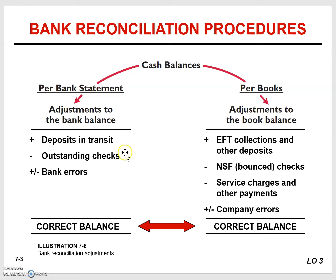There could also be some outstanding checks. Outstanding checks can result from checks written to vendors, suppliers, or employees that have not been cashed yet. Because that money technically doesn't belong to the company anymore, it should be subtracted from the company's cash balance. You would then add or subtract any bank errors to arrive at the correct balance.